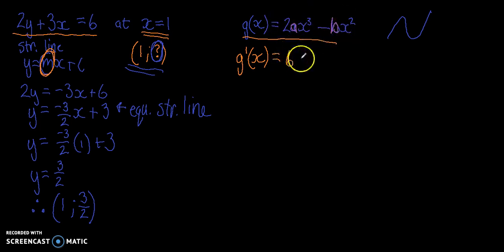That becomes 6ax to the power of 2 minus 2bx.